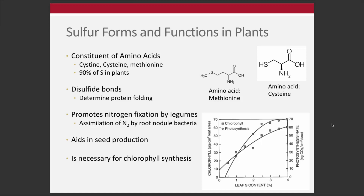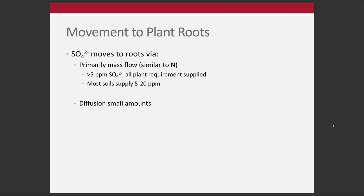Like nitrate, sulfate primarily moves to the roots via mass flow — movement with water. Greater than five parts per million sulfate in solution will typically meet pretty much all plant requirements. Most soils supply somewhere around five to twenty ppm sulfur. That's a ballpark figure, but there are instances of deficiency, which we'll talk about later.